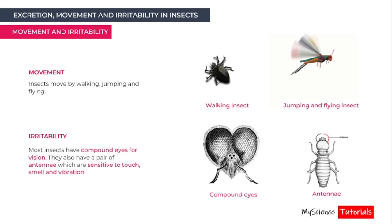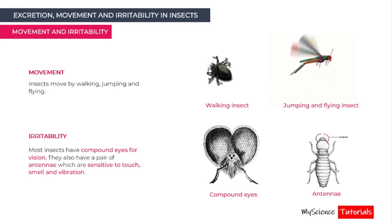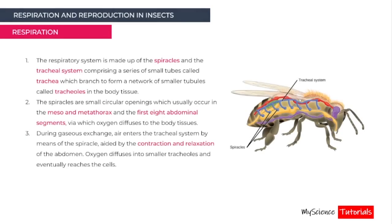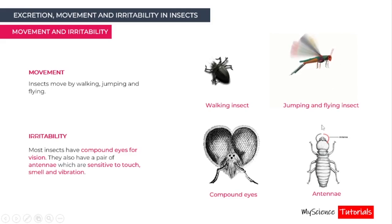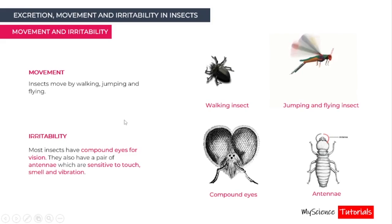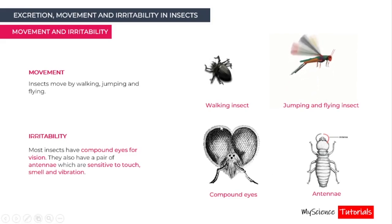For movement, insects can move by walking, jumping, or flying. A typical example of a walking insect and a grasshopper jumping and flying are shown here. For irritability, most insects have compound eyes for vision with a wide range of view, helping them detect and escape enemies. They also have a pair of antennae which are sensitive to touch, smell, and vibration.